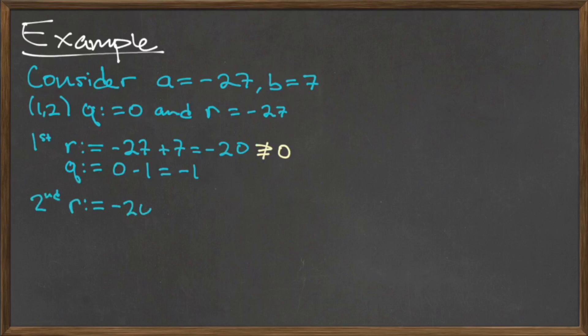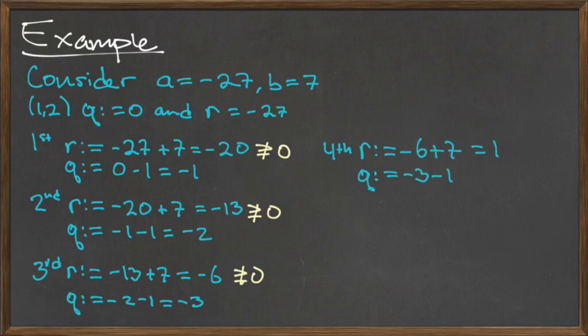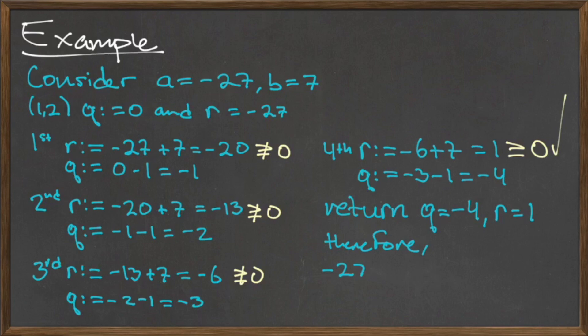This loop must be run an additional three times before the stopping condition is satisfied. At the end of the fourth iteration, the value for q is negative 4 and the value of r is 1, which are returned as output. So the division of negative 27 by 7 can be expressed as: negative 27 equals negative 4 times 7 plus 1.